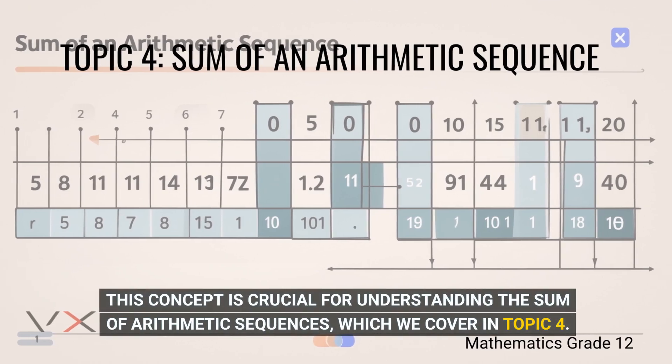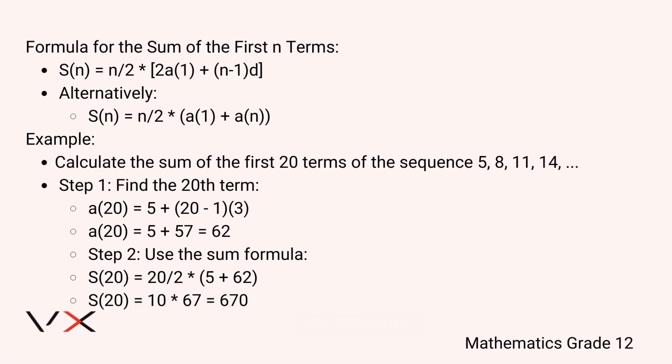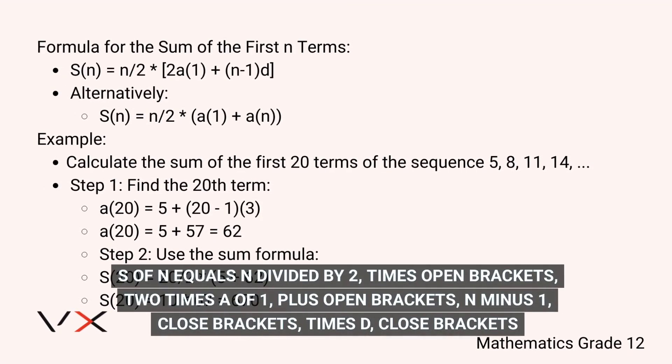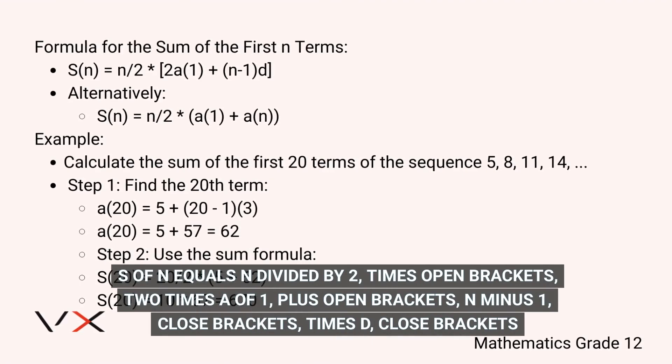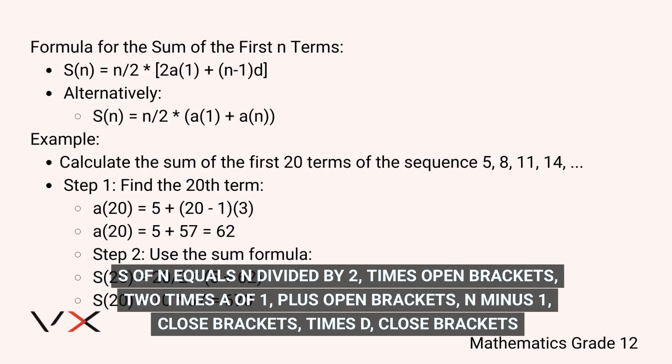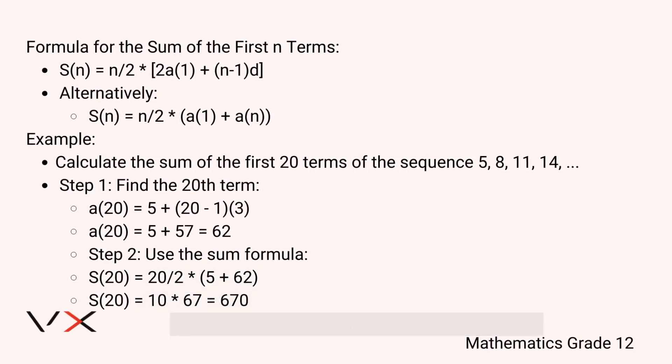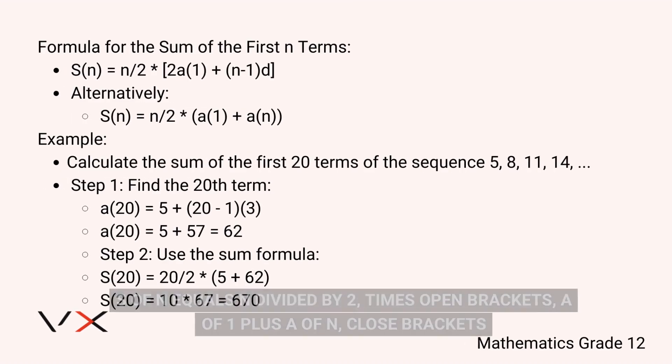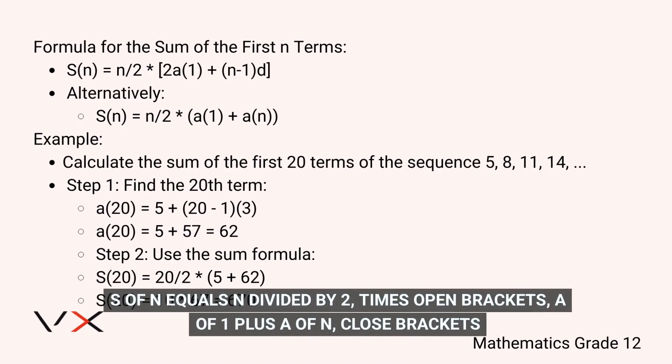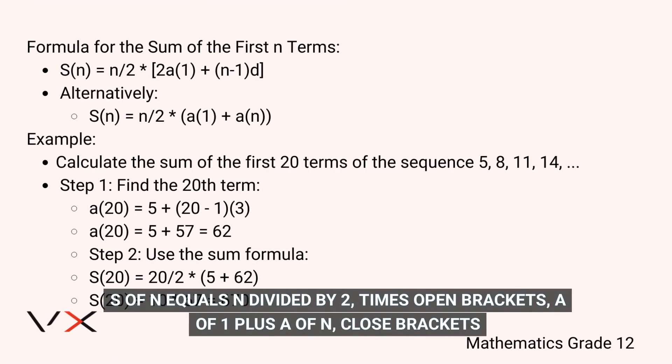This concept is crucial for understanding the sum of arithmetic sequences, which we cover in Topic 4. To calculate the sum of the first n terms, we use the formula S(n) = n/2 × [2a(1) + (n-1)d]. Alternatively, S(n) = n/2 × [a(1) + a(n)].